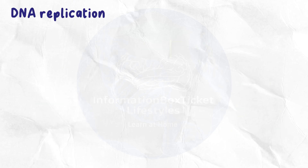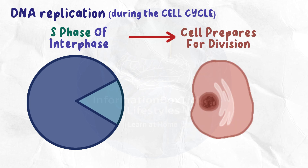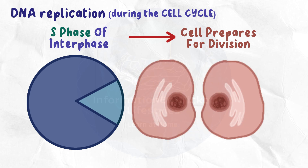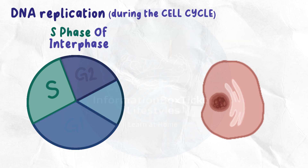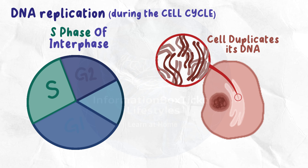DNA replication happens during the cell cycle, especially the S-phase of interphase. The cell cycle consists of two stages: interphase, when the cell prepares for division, and mitosis, when the cell splits into two daughter cells. Interphase contains three subphases — G1, S, and G2. During the S-subphase, the cell duplicates its DNA, ensuring that the two daughter cells get identical DNA during mitosis.